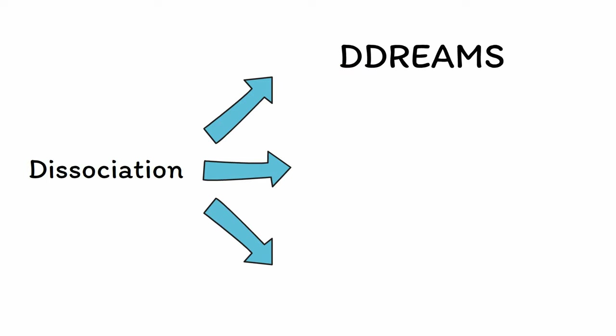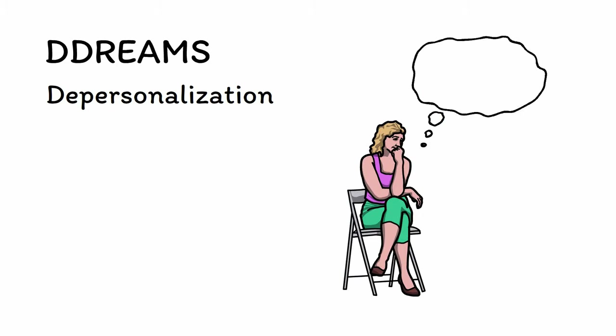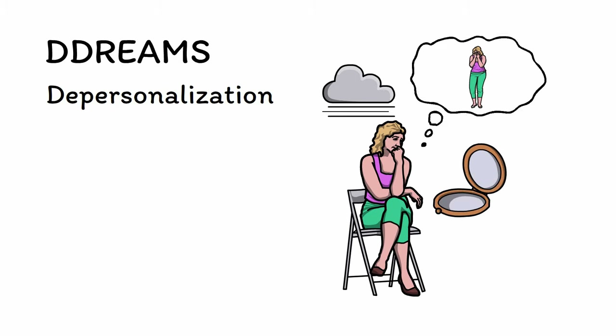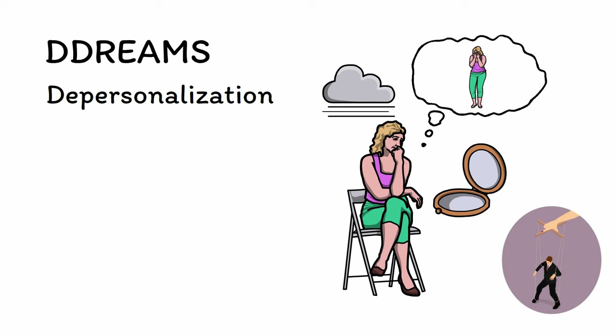To help keep these straight, let's use the mnemonic DREAMS. The first two letters refer to the subjective experiences of dissociation — the feeling of unreality that we talked about already. This feeling comes in two forms. First is depersonalization, which is the feeling of having become detached from your own body and sense of self. People experiencing depersonalization may suddenly feel a strange sensation that they are not real or that their body is unfamiliar to them. They may look at their body and think, 'I'm not myself,' or look in the mirror and say, 'that isn't me.' This can also be experienced as a sense that their body is out of their control, or that they are observing their body from an outside perspective, or that their behavior is being controlled by someone else as if they were a doll or puppet.